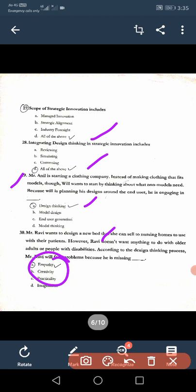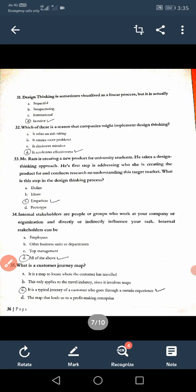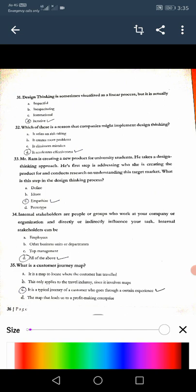Twenty-ninth: The question answer is design thinking for 29. Thirtieth: Mr. Ravi wants to design a new bed that he can sell to the nursing home to use, but he is not taking the report with adults and all. He is not understanding the problem of the parents, so it is empathy, 30A. Thirty-first: Design thinking is sometimes utilized as a linear process but it is actually iterative process. Thirty-second: Which of this is a reason that companies might implement design thinking? It accelerates effectiveness D.